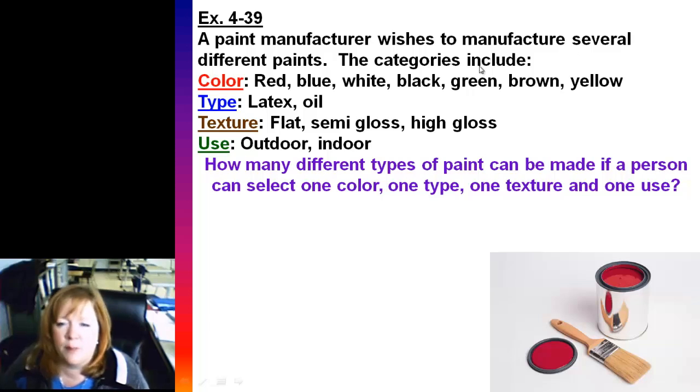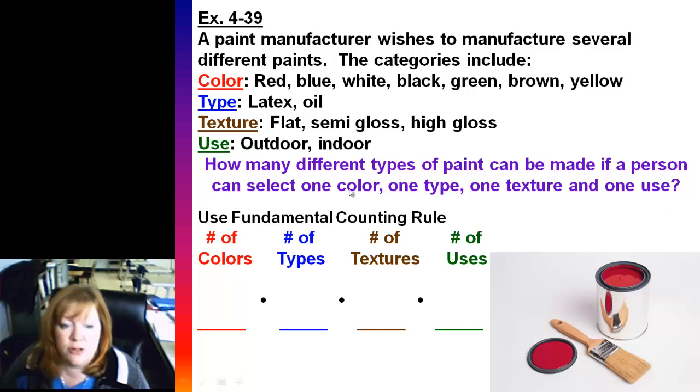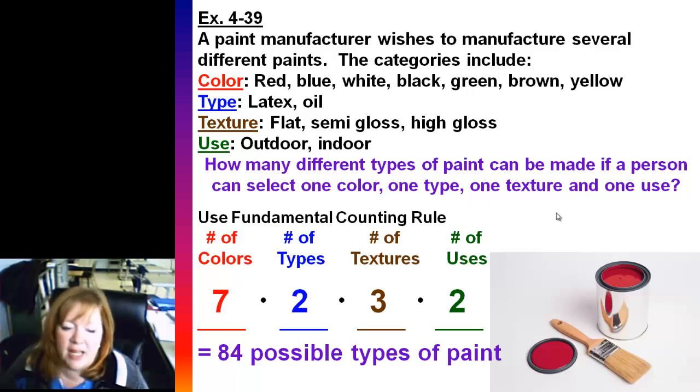Here's a paint manufacturer, and he's going to manufacture several different types of paint. You have different categories: color, type, texture, and use. And they want to know how many types of paint could you make if you select one color, one type, one texture, and one use. So we're going to use the fundamental counting rule. One thing I like to do when I'm using this rule is to put blanks for each category or event, and I know I'm going to be multiplying those numbers. So we've got number of colors, types, textures, and uses. There's seven colors, there's two types (latex and oil), three types of textures, and there's two uses. Multiplying those all together, you get a total of 84 different possible types.